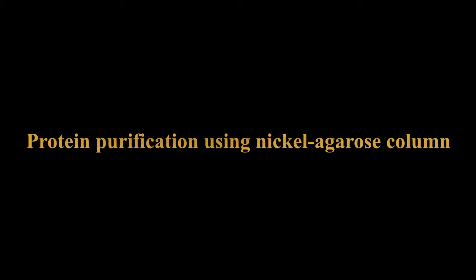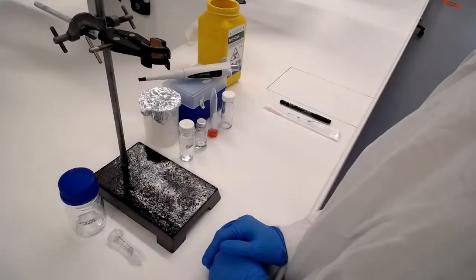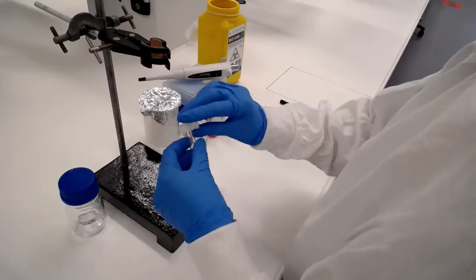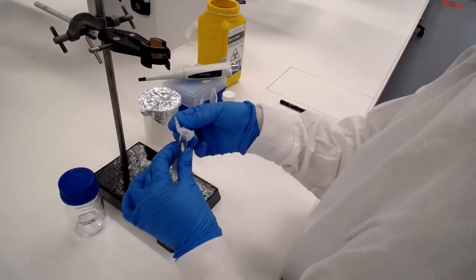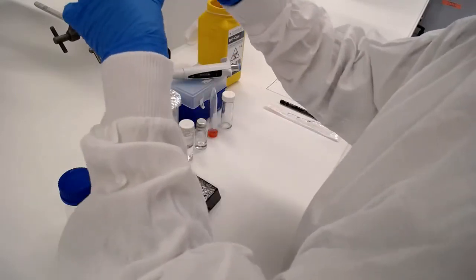We're going to purify our protein using a nickel agarose column. This column is only useful if we have a histidine-tagged protein, but our protein in this case, the 6-his-PFU, should work well using this method.